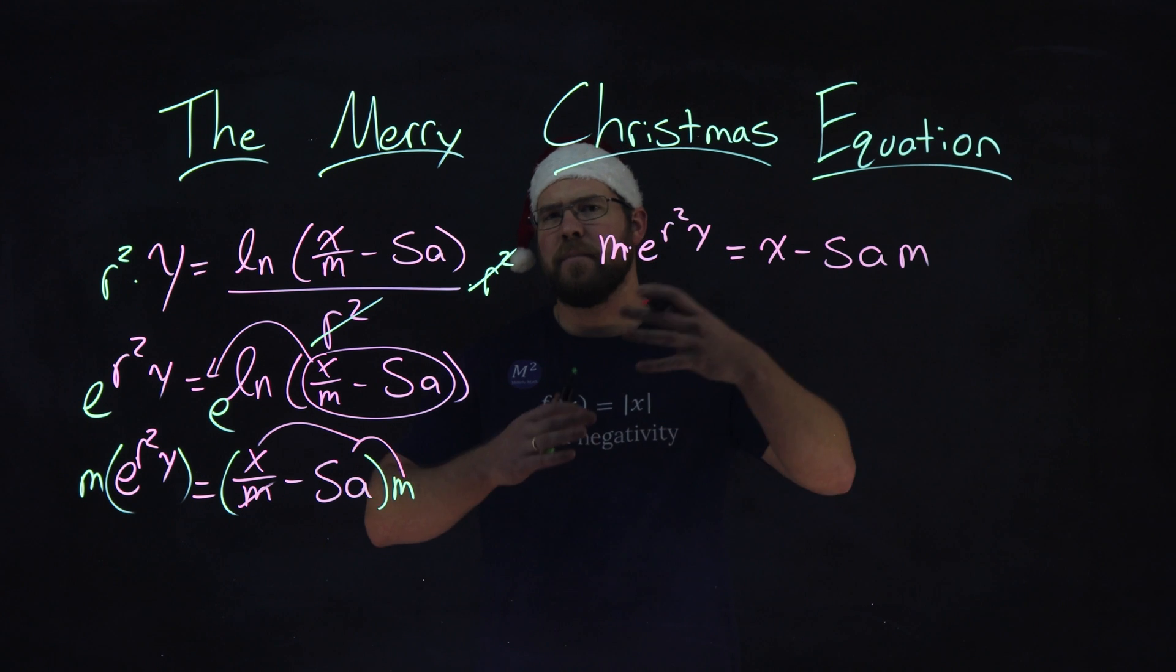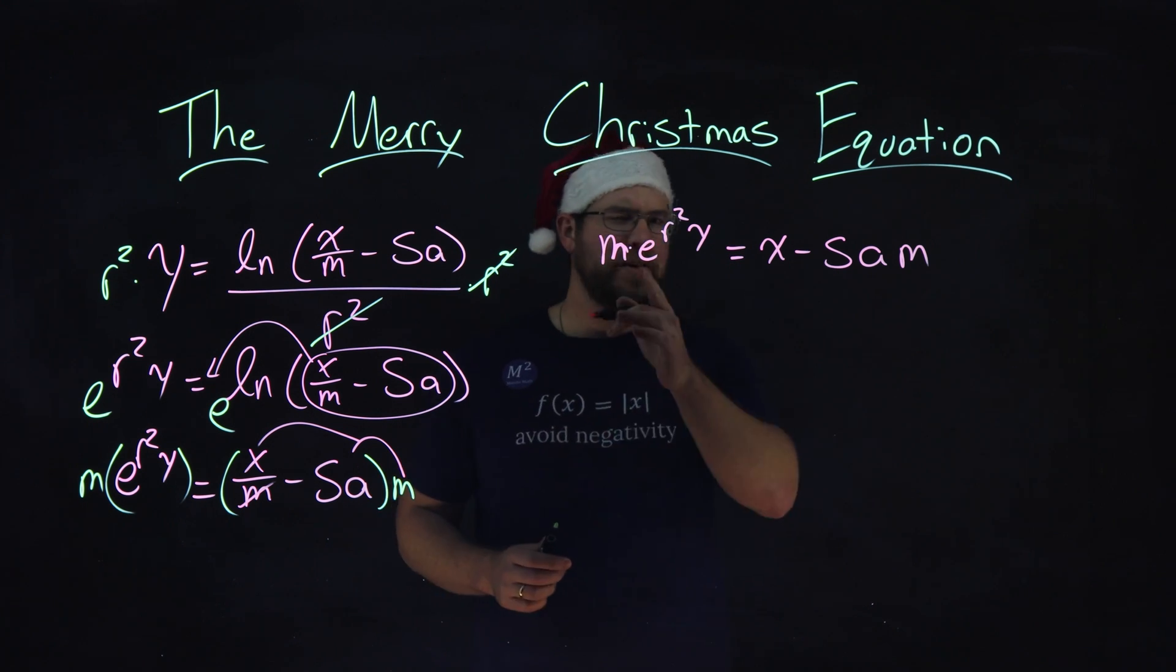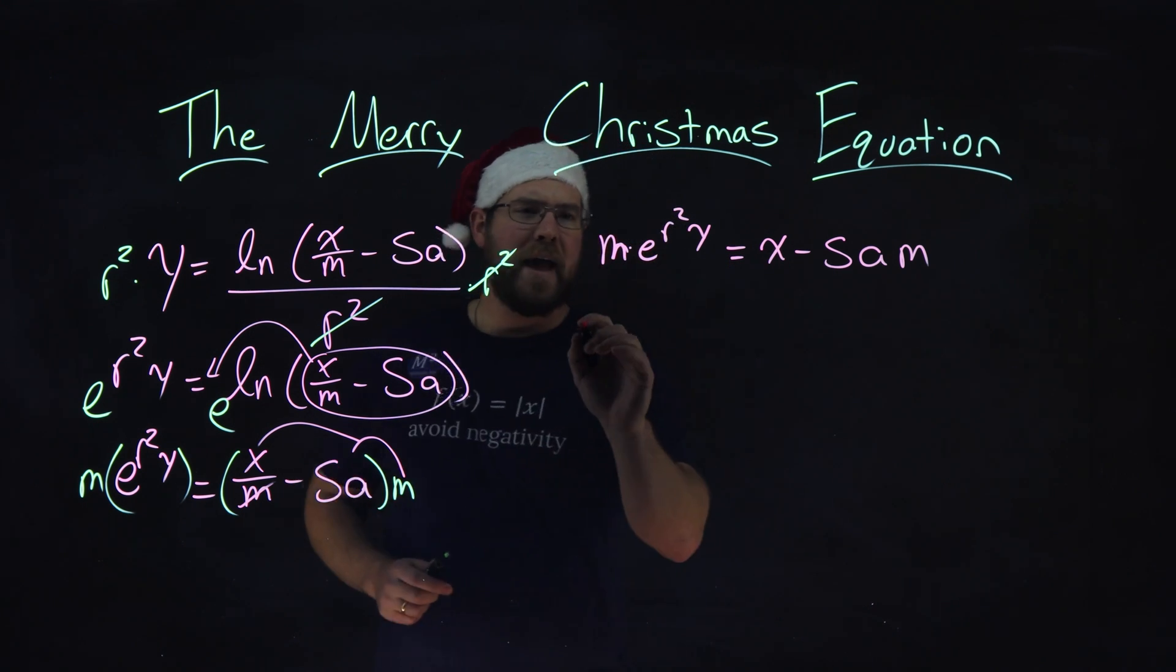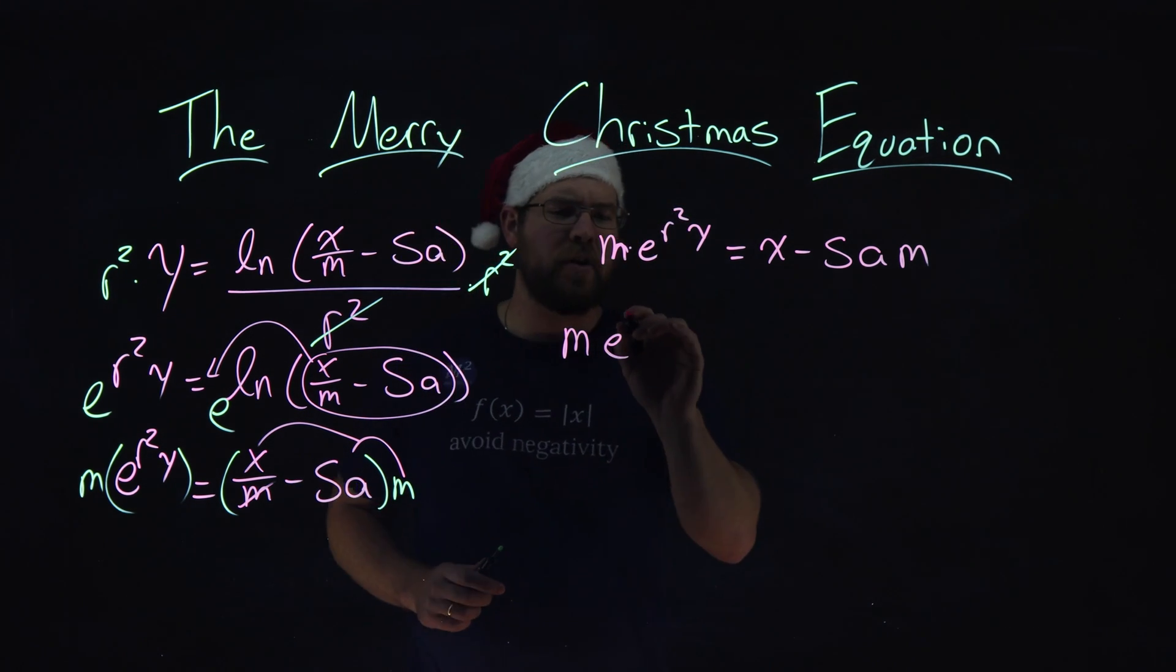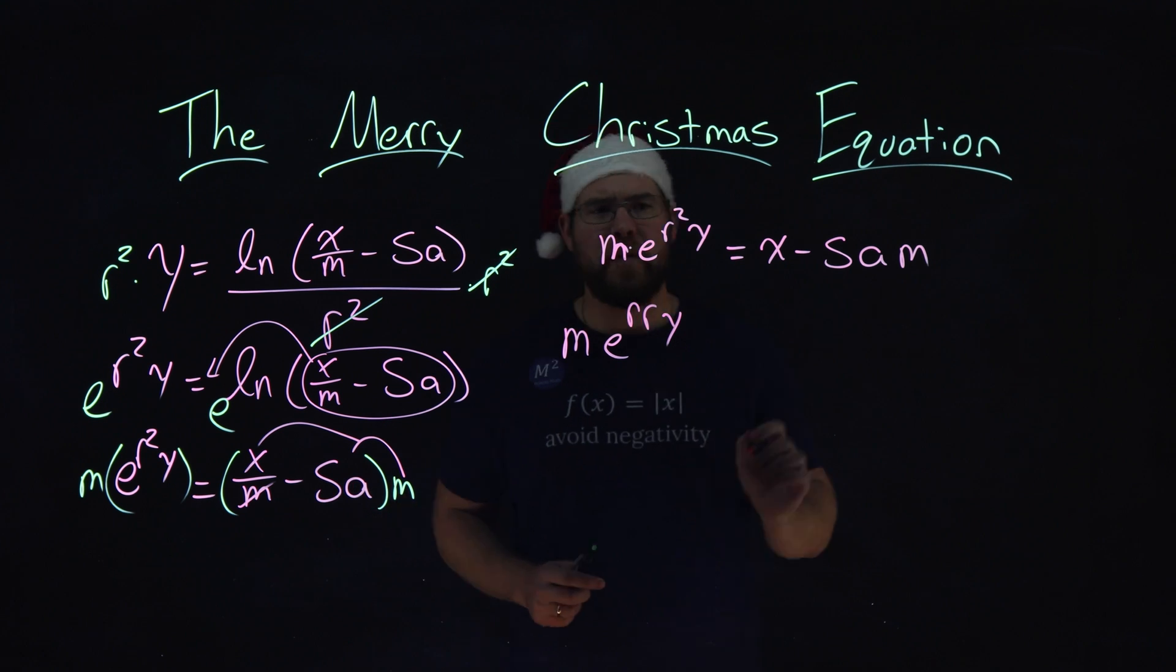Now, let's rearrange, expand some things, and we'll get there. We have an m times an e to, instead of an r squared, that's an r times r, y, right there, equals left hand, a right hand side.